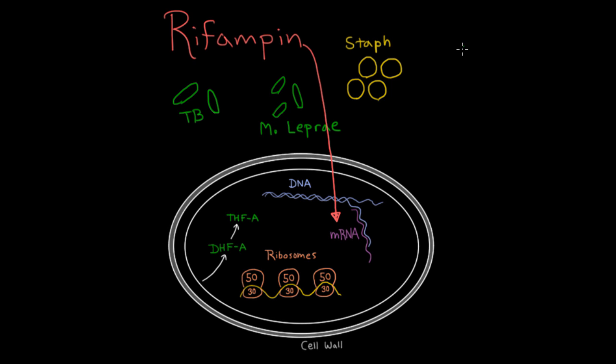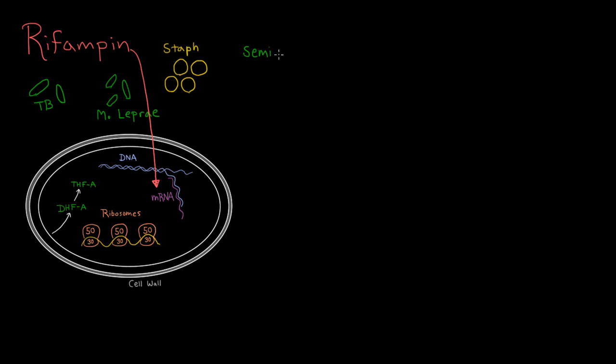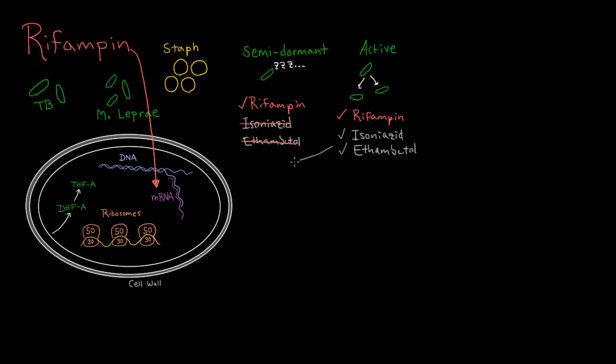Now rifampin has a special property, which is that it can kill semi-dormant TB. What is semi-dormant TB? As you might guess, it's TB that's less metabolically active and dividing less rapidly. The fact that rifampin can kill these guys is important because isoniazid and ethambutol cannot. The reason is isoniazid and ethambutol both stop mycobacteria from being able to make new cell wall. Semi-dormant TB is not making much cell wall, so it can survive treatment with those drugs.